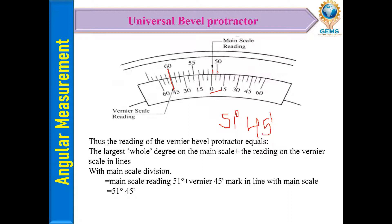In the laboratory, you can practice reading the universal bevel protractor. You read the degrees from the main scale and then determine the minutes from the vernier scale coincidence, giving a complete angular reading in degrees and minutes.